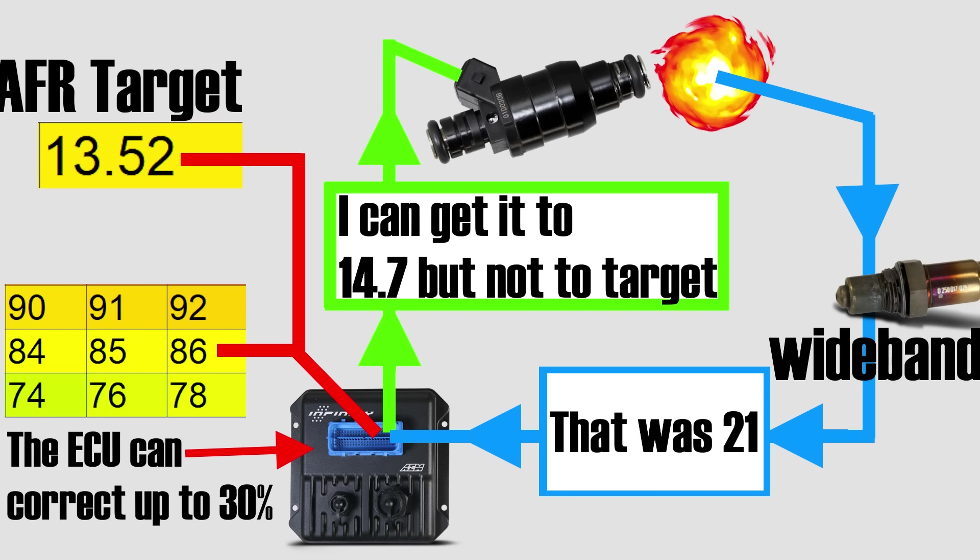This means that if your engine is something weird or extreme, you might be ingesting 30% more air in certain parts of the map. And in this case, you'll be outside of the target air fuel ratio and the ECU won't be able to compensate unless you properly manually adjust your VE map.